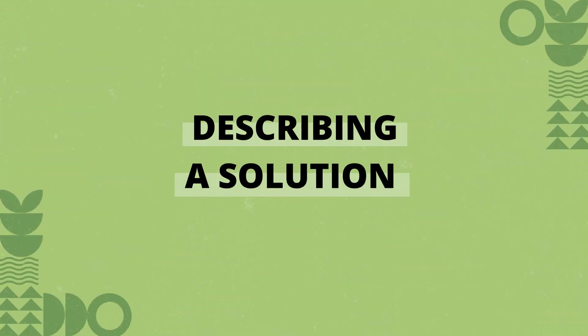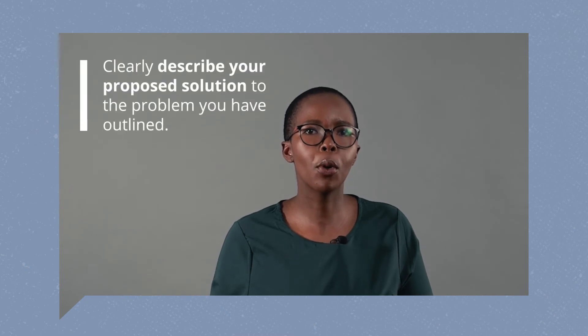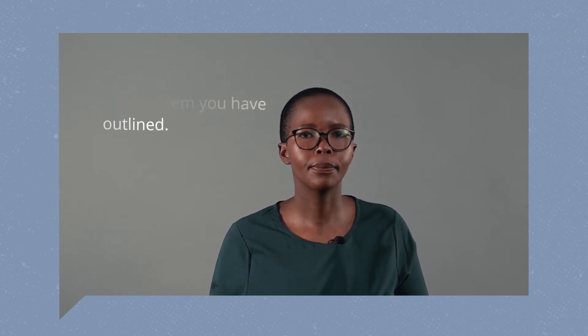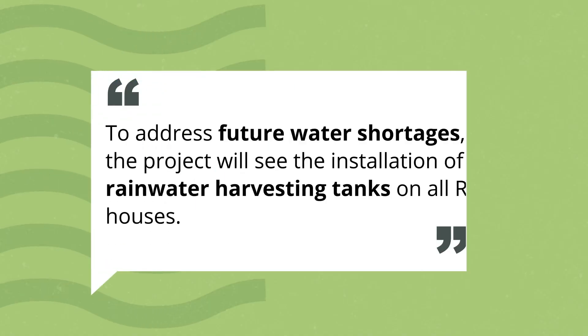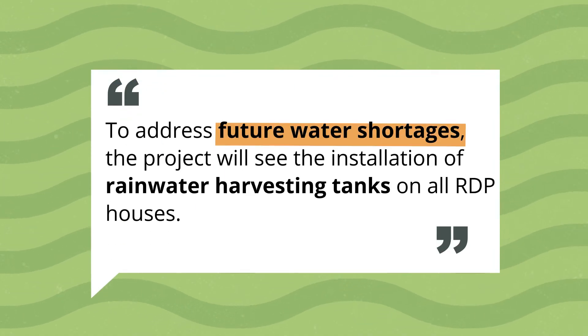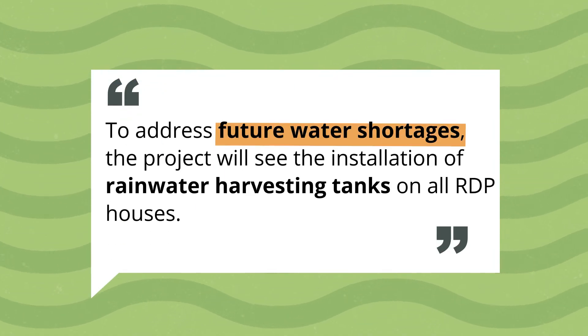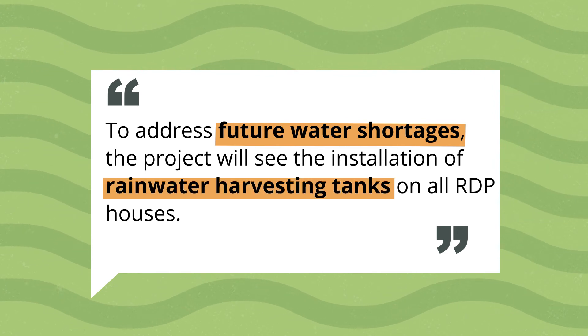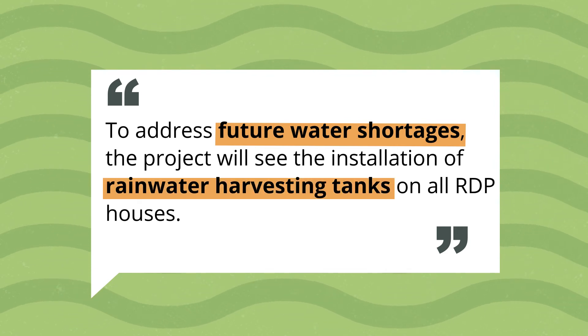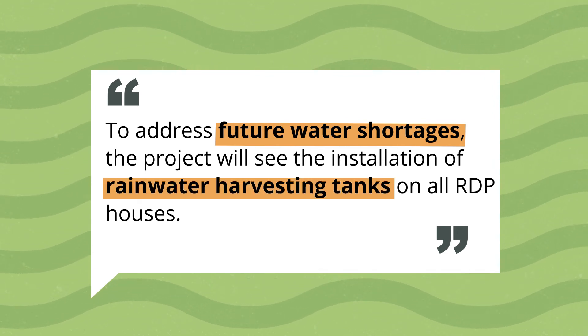When writing the solution to the problem, you need to clearly describe your proposed solution to the problem you have outlined. If we use the previously described water shortage problem statement, an example of a project solution would be: to address future water shortages, the project will see the installation of rainwater harvesting tanks on all RDP houses.